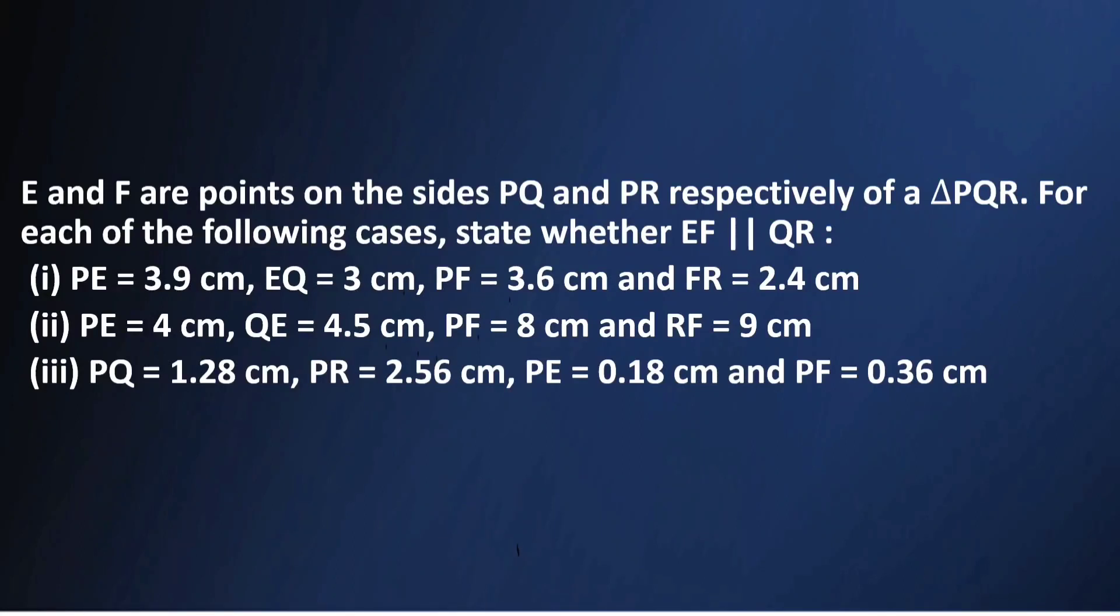E and F are the points on the sides PQ and PR respectively of a triangle PQR. For each of the following cases state whether EF is parallel to QR.